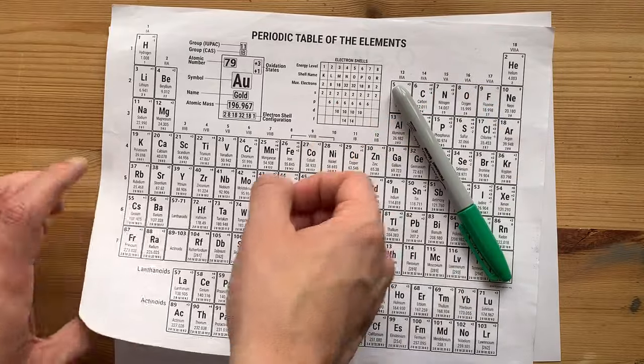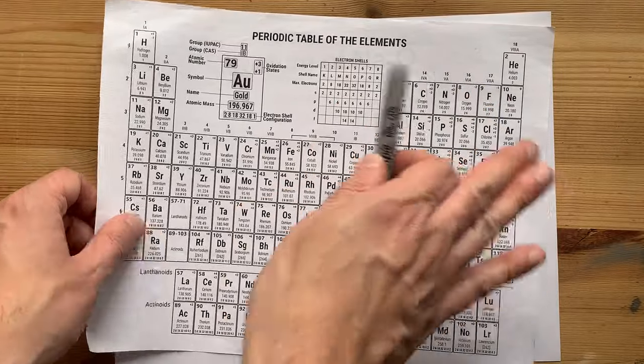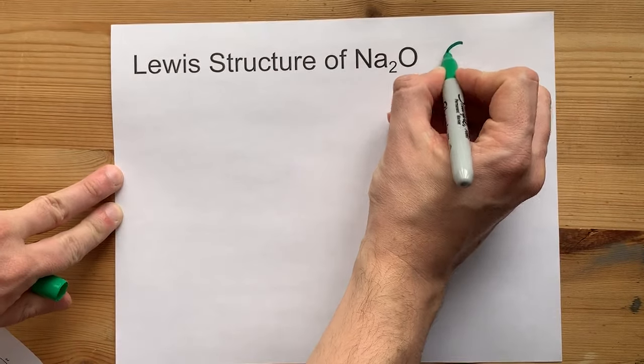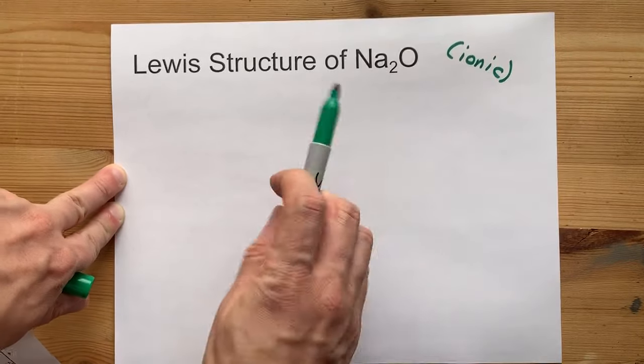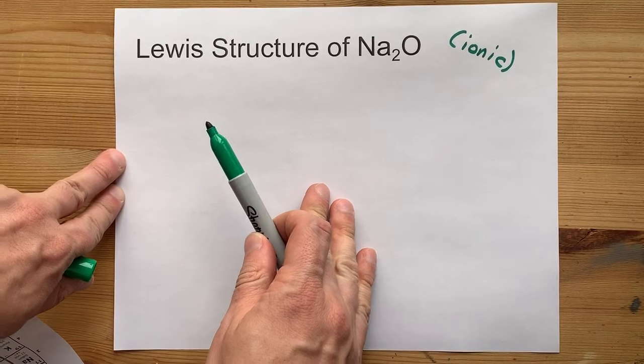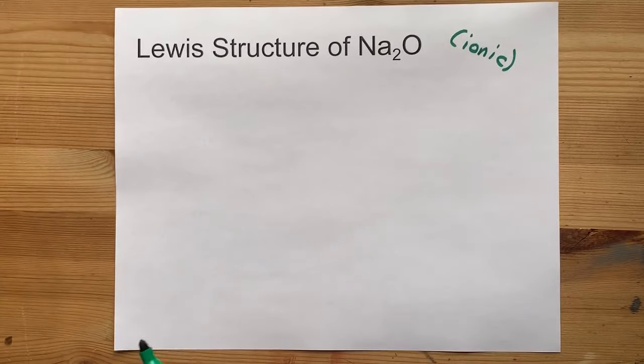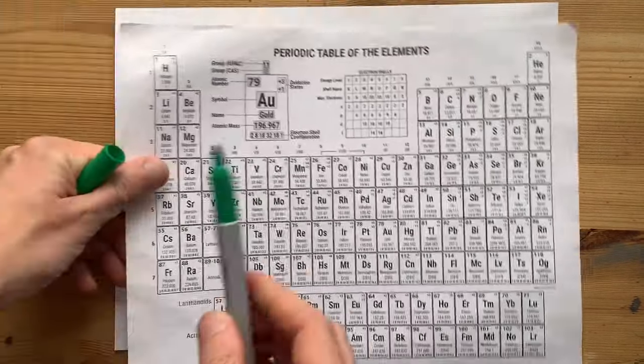Oxygen comes from the right of the periodic table. That means it's a non-metal. A metal plus a non-metal together form an ionic compound. That means that the Na will give up its electrons, and oxygen will take those electrons away from it. Let's find out how that happens in detail.